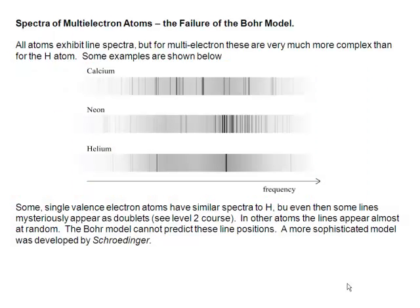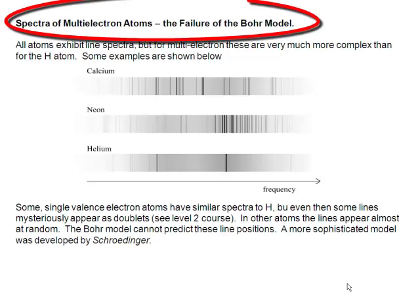So we have this beautiful picture of the hydrogen atom which has been developed. We can describe it with the Rydberg equation, we can describe it using the Bohr theory, but the same arguments apparently don't work for the helium atom. And it's only got one more electron, so something else must be going on.